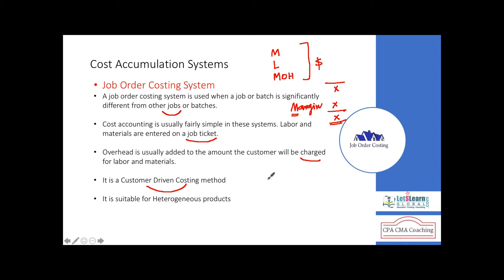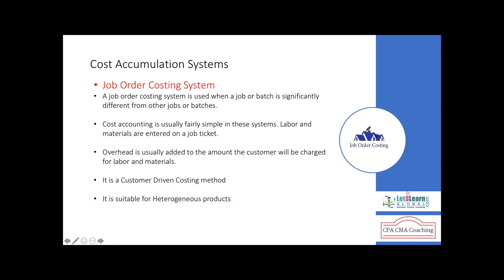Customer-driven costing means costing is purely based on the customer's instructions, specifications, and requirements. These kinds of products are called heterogeneous products — the product or service is entirely different from customer to customer. You cannot say one customer's order is the same as another. For heterogeneous products, we use job order costing.